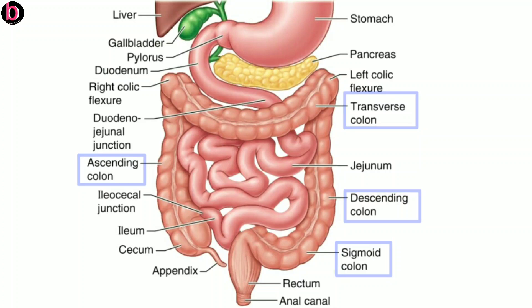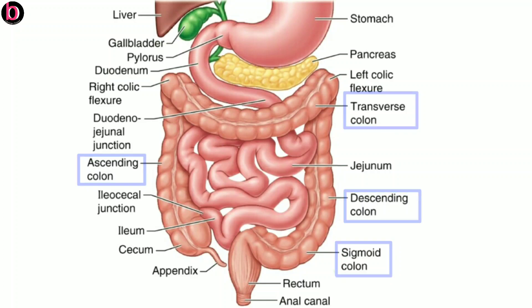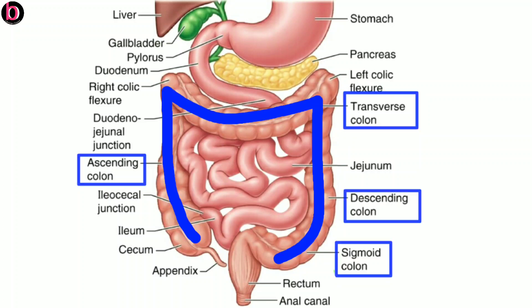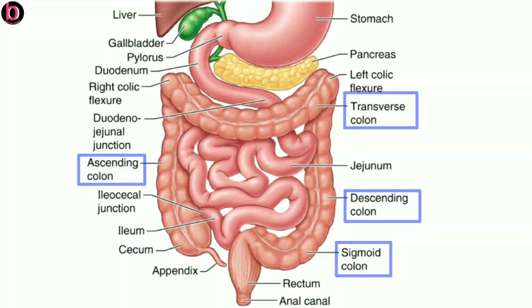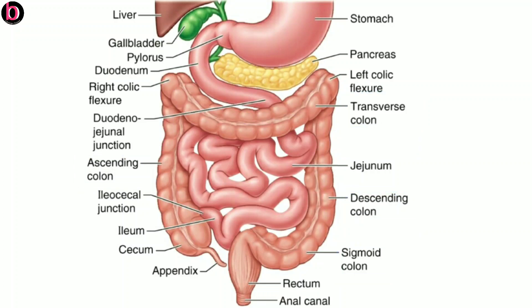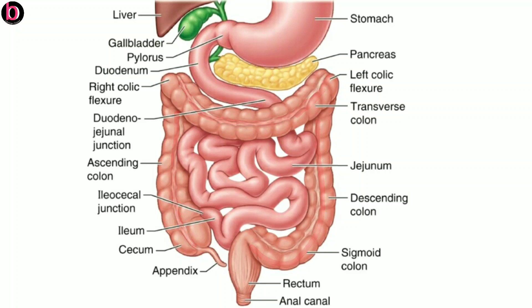The colon is divided into four parts: ascending colon, transverse colon, descending colon, and sigmoid or pelvic colon — appearing like an inverted U shape. The colon carries three longitudinal bands known as taenia coli, and internally there are a number of small pouches of the large intestine known as haustra.